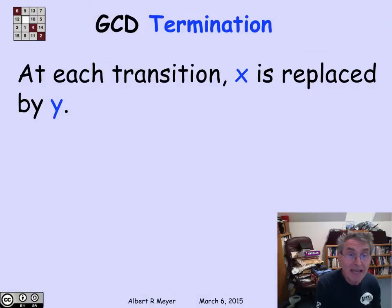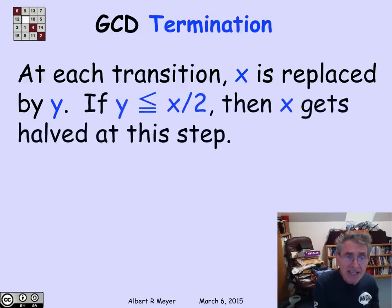Let's see why. Notice that at each transition, we're going to replace x by y and y by the remainder of x divided by y. Let's just assume for simplicity of the pair x,y that x is the bigger one. There's two cases. The first case is suppose that y is less than or equal to x over 2. Since at this step you're going to replace x by y, it means that you're replacing x by something that's less than half x. So x gets halved at this step.